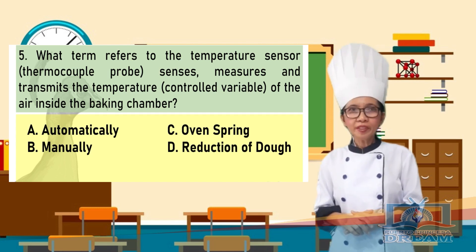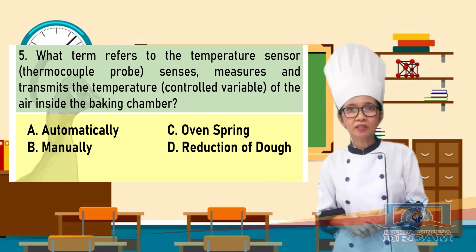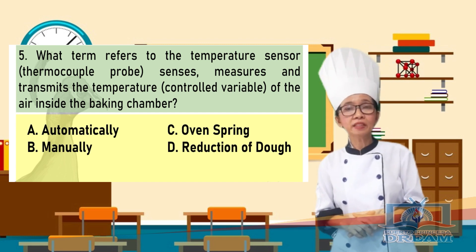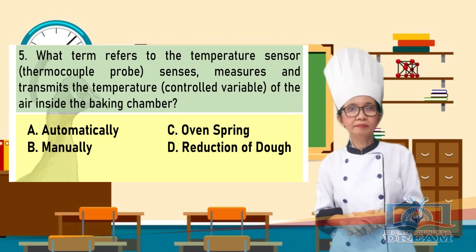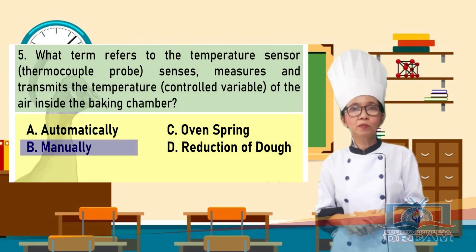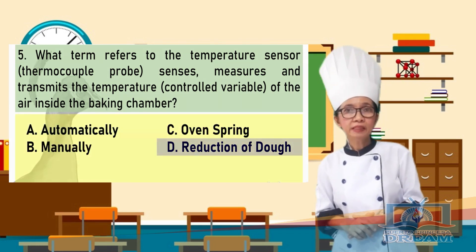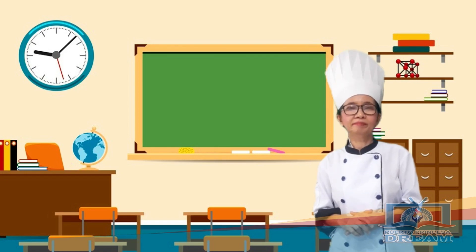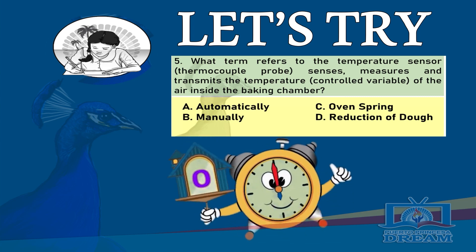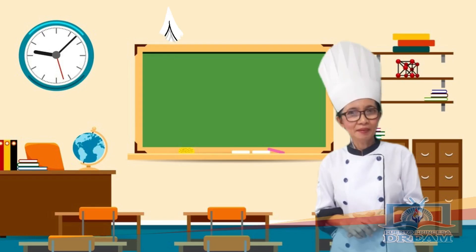What term refers to the temperature sensor that senses, measures, and transmits the temperature of the air inside the baking chamber? A. Automatically, B. Manually, C. Oven spring, D. Reduction of dough. Time is up!